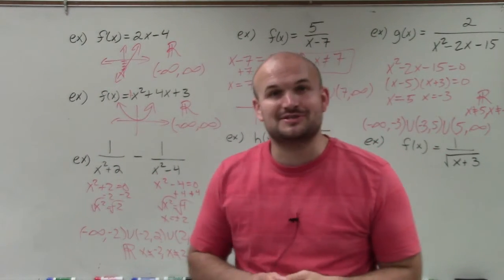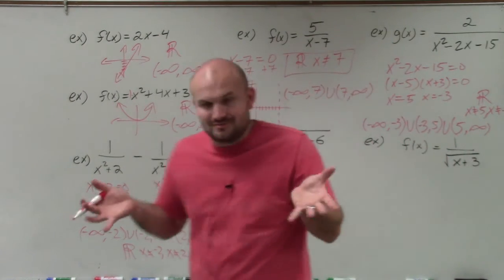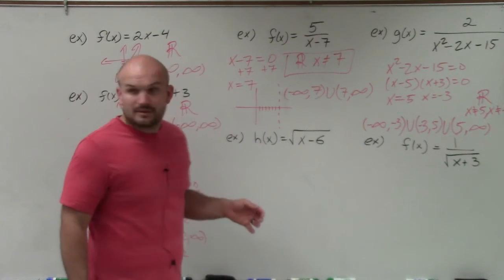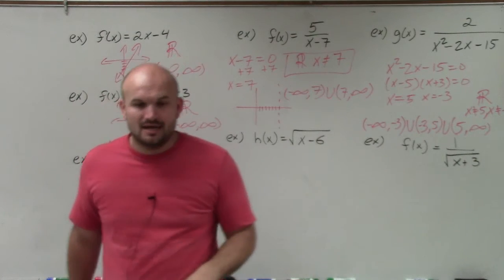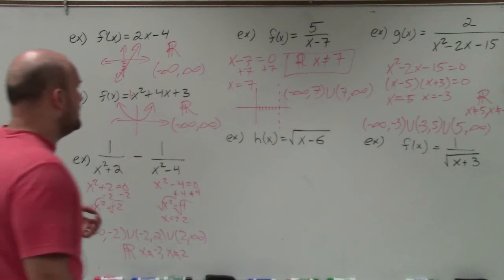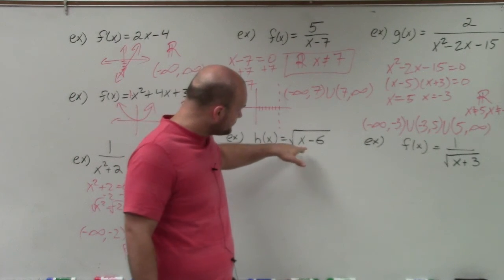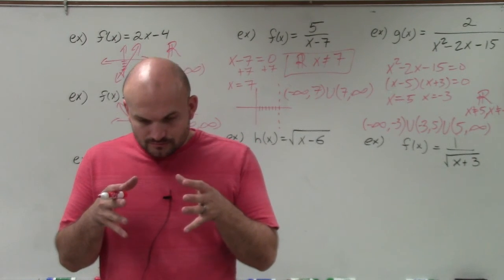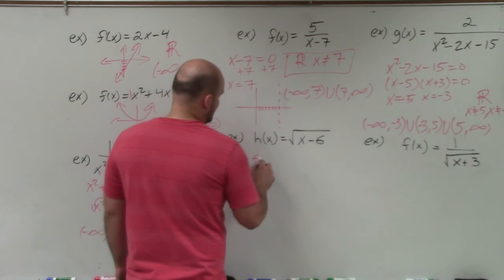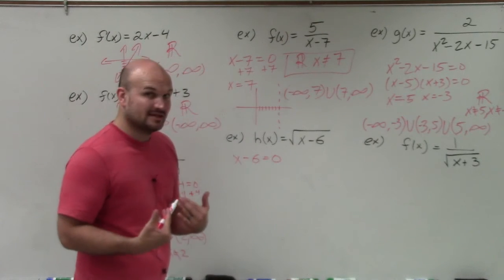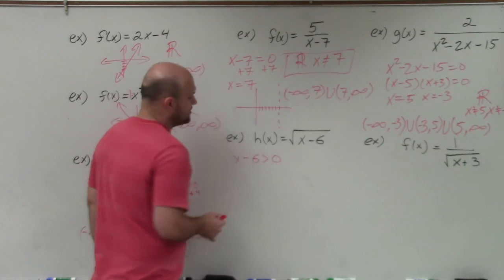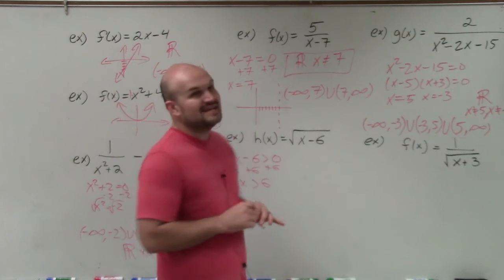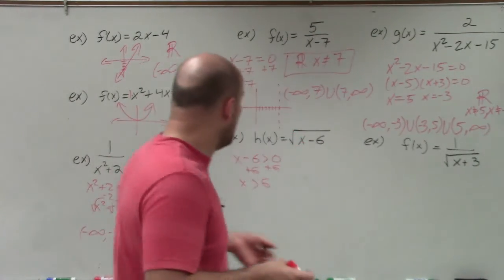Now let's get to our square roots. In this example we have a radical, not a rational, so we don't care about values making a denominator zero. What we're concerned about is what numbers are going to make the expression under the radical negative — it can be zero, it just can't be negative. So we set the expression inside equal to zero to find the boundary. The expression equals zero when x equals negative six. But all numbers greater than or equal to negative six can work.